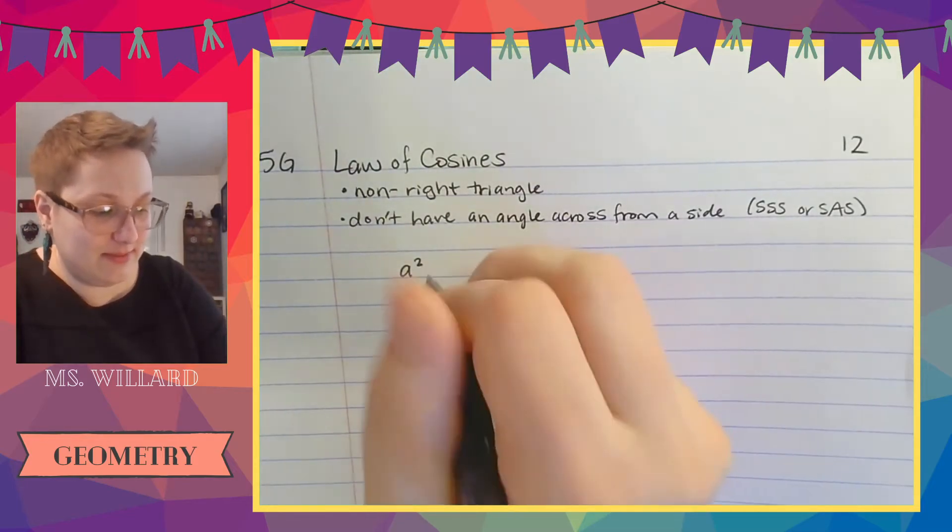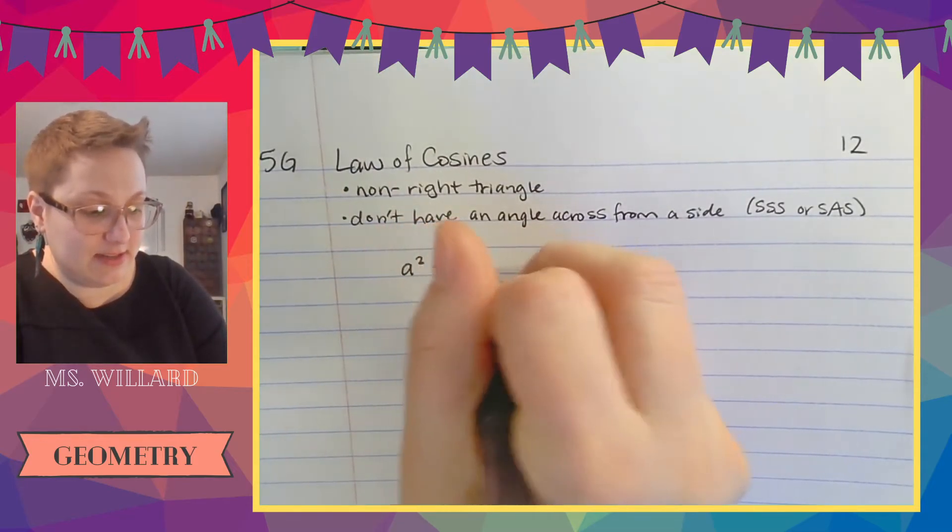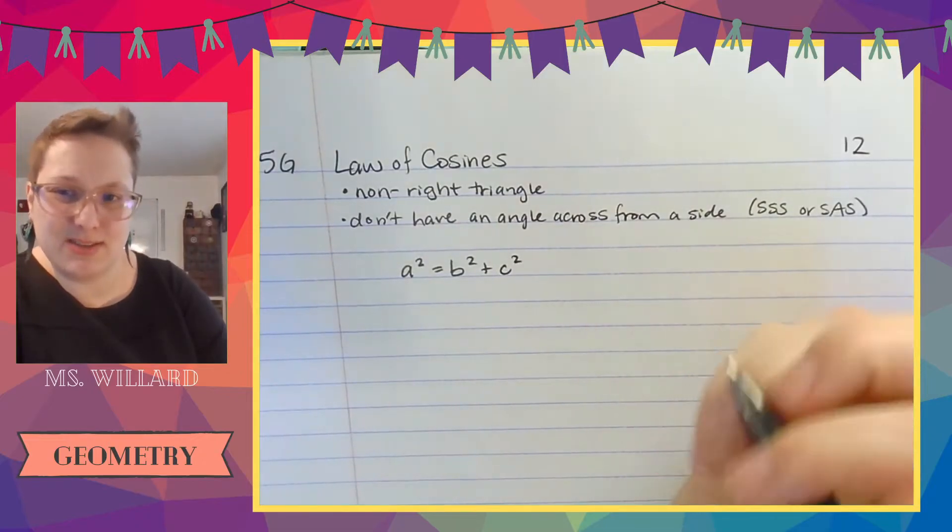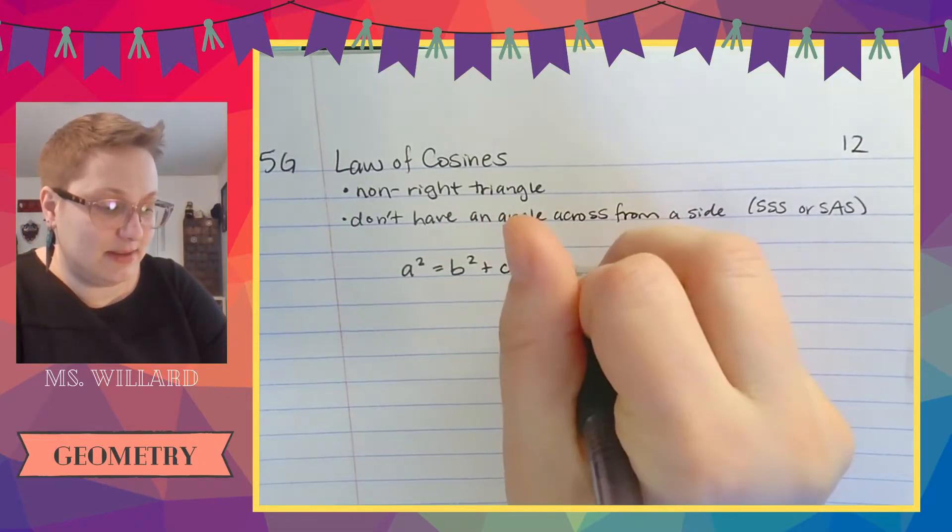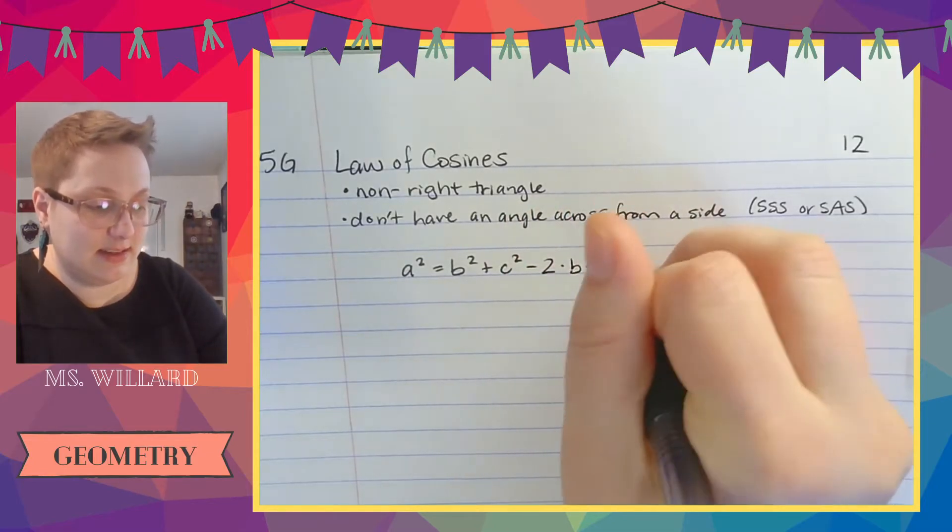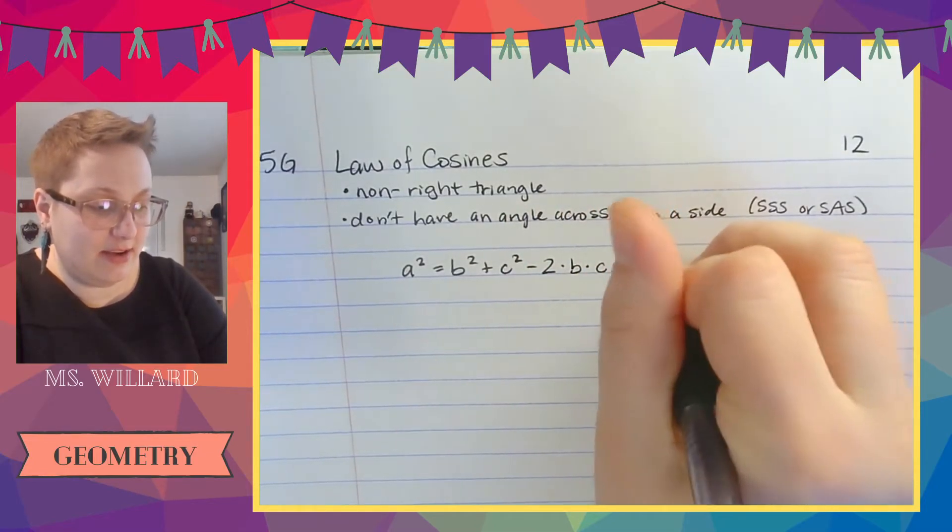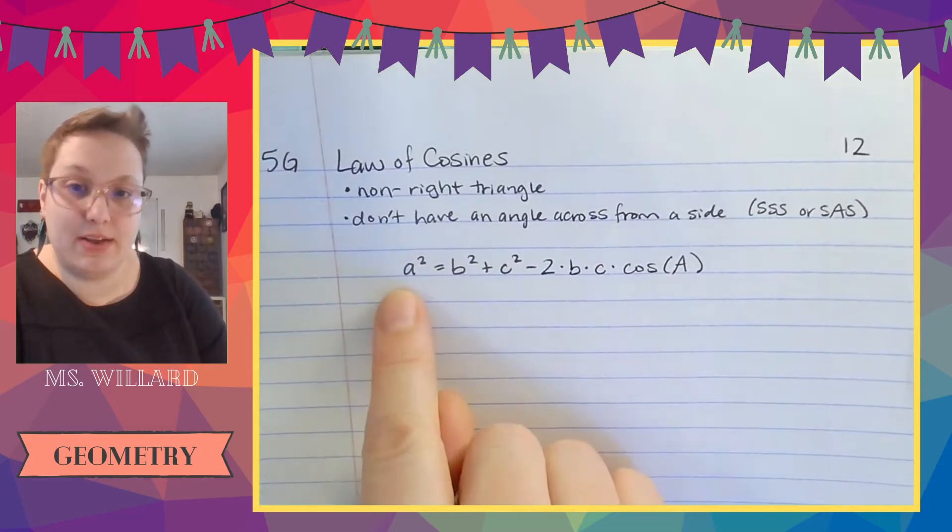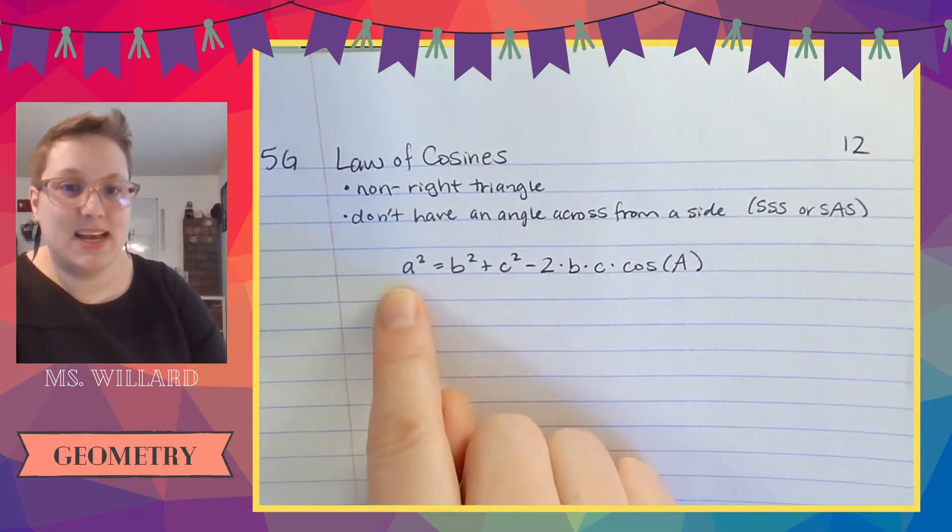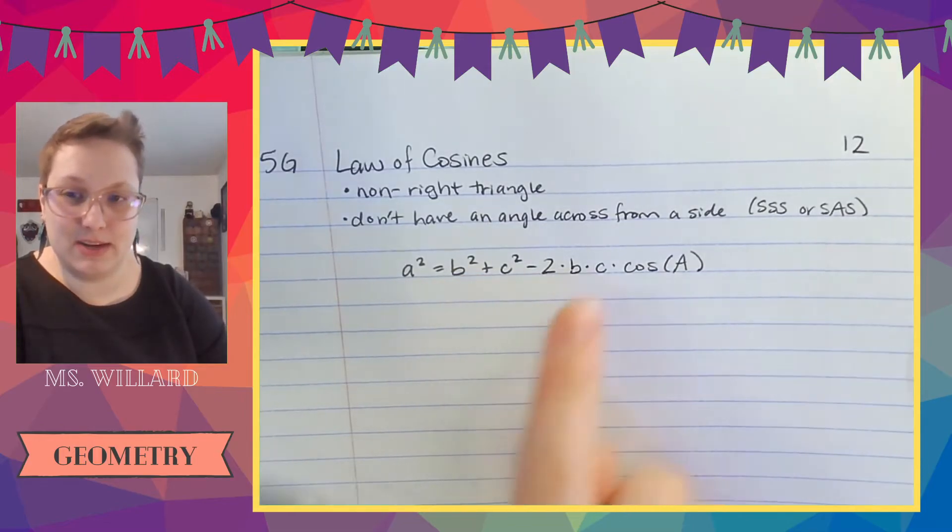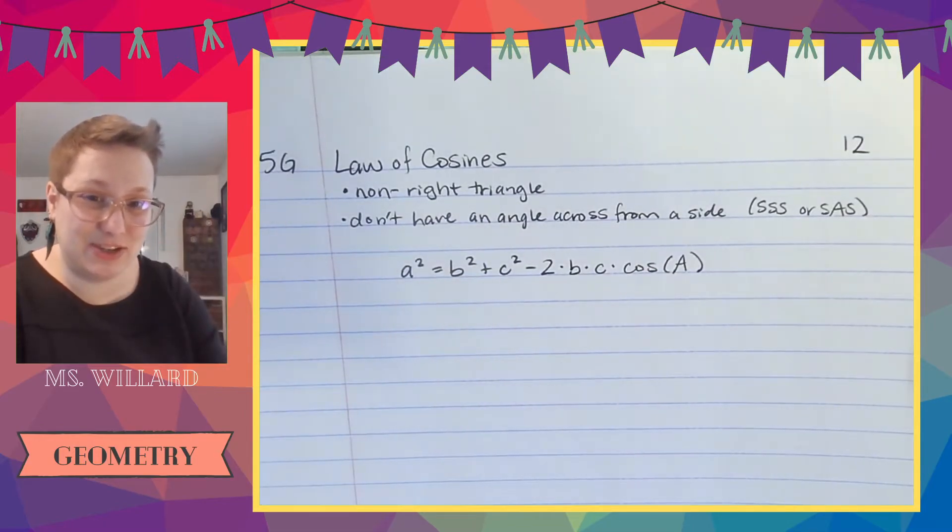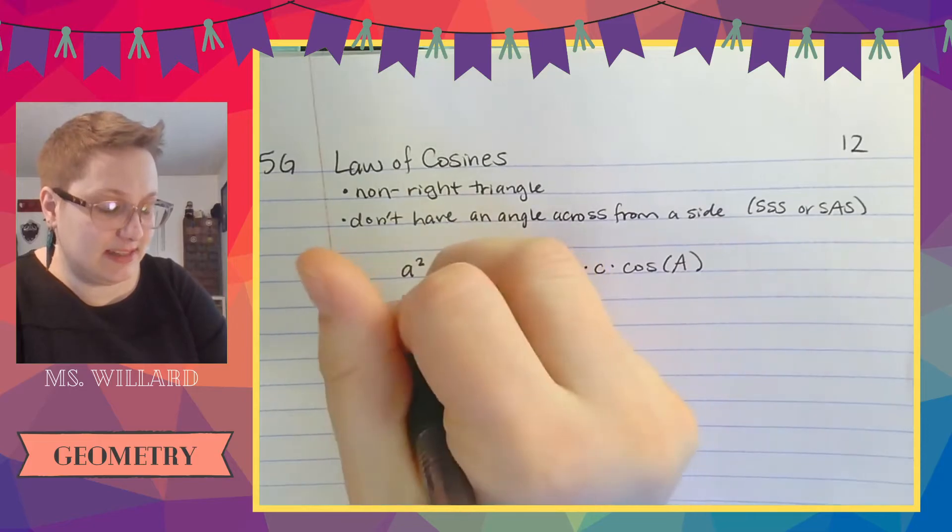So any side squared equals the other two sides squared. But where's the cosine part? It's right here. Minus two times the two sides times cosine of the angle across from the side that you either know or want. This makes an A sandwich. Everything else in here is the other two letters. And you can do this with any letter combination.